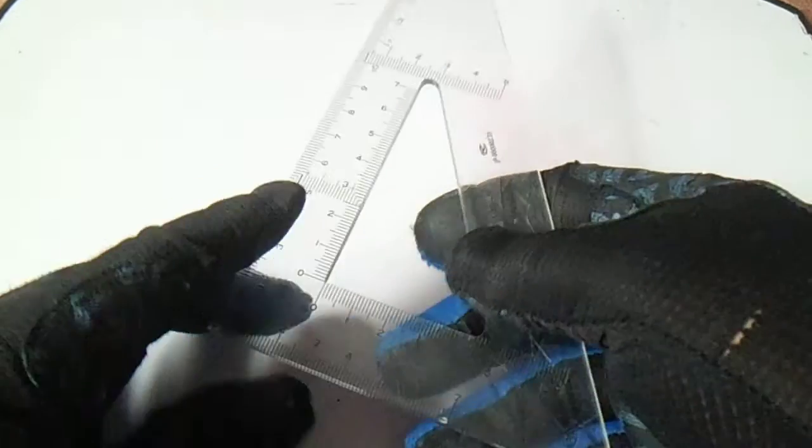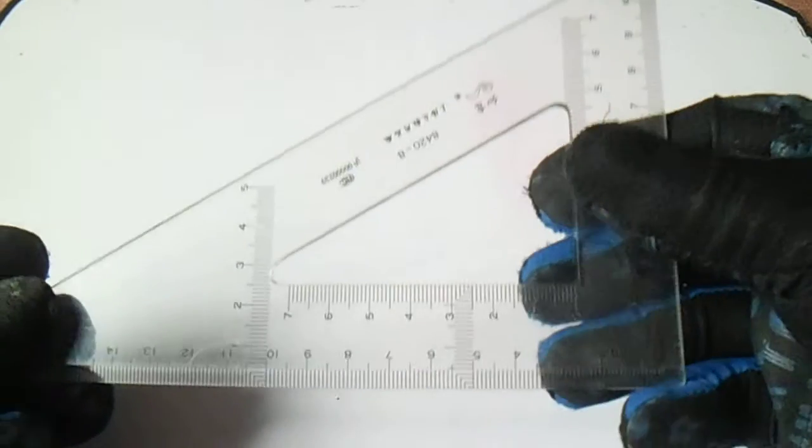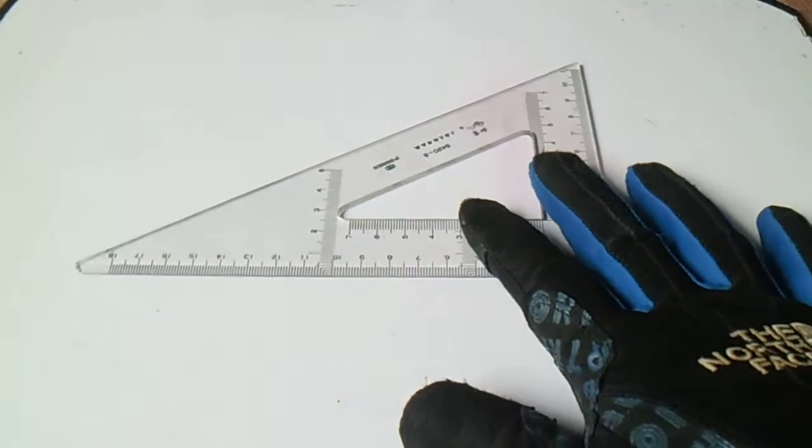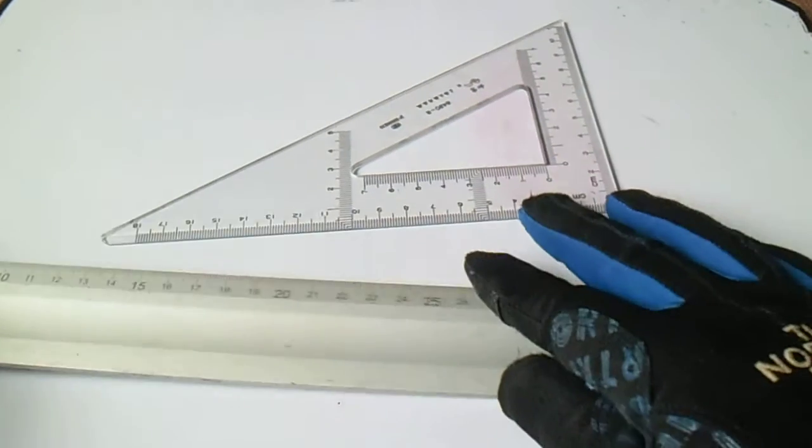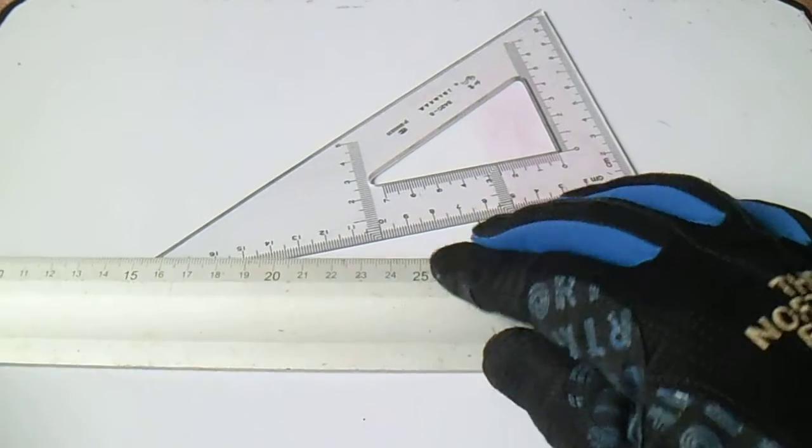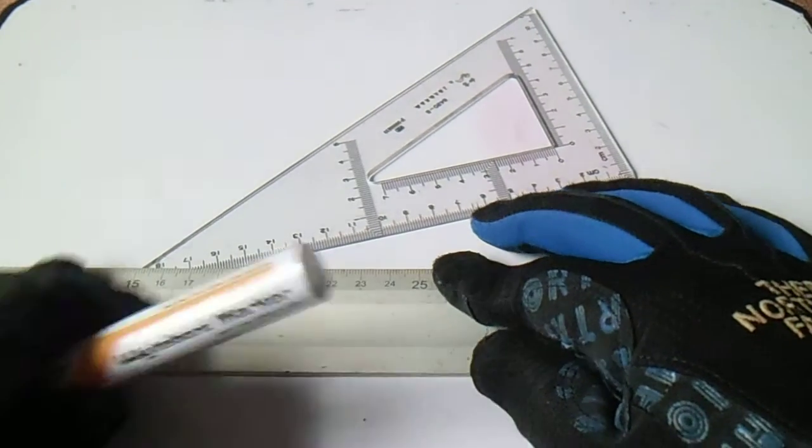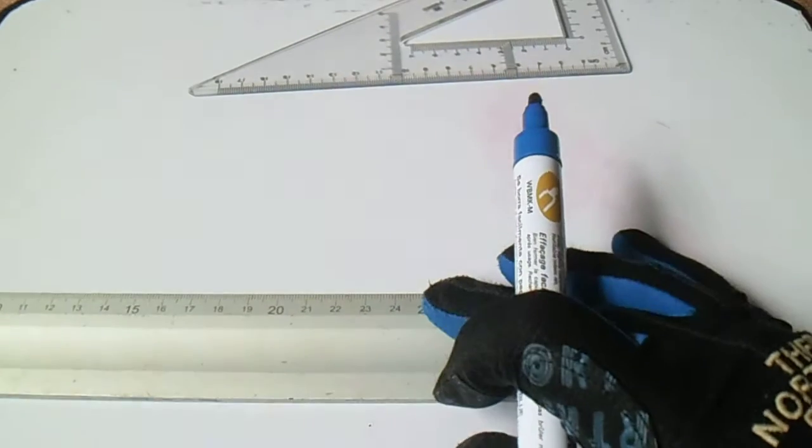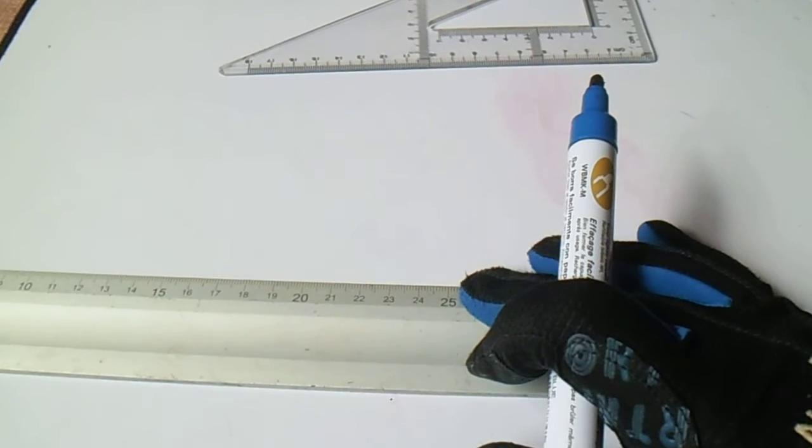Hi guys, welcome to Piping Welding and DT Channel. How to make an isometric box using this 30 by 60 triangle and one ruler. Okay, so first we will make a line here. This is your baseline.